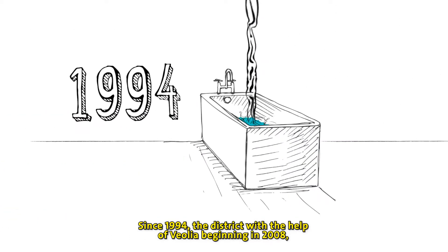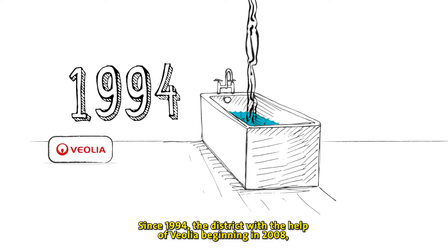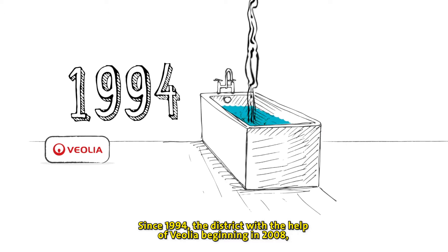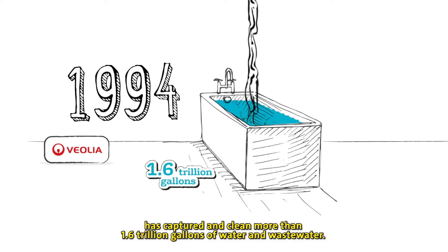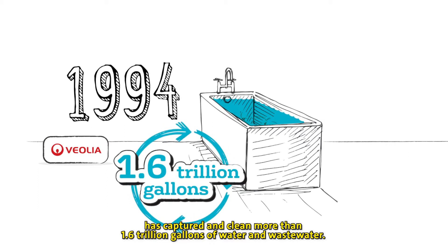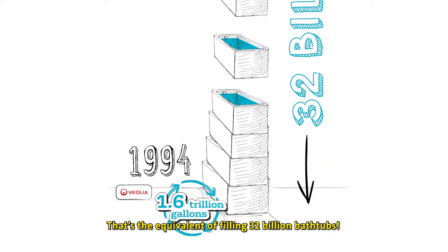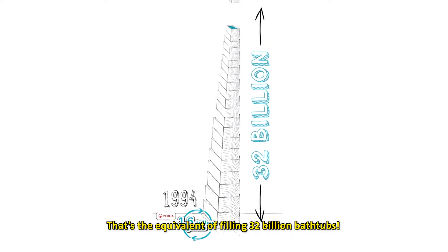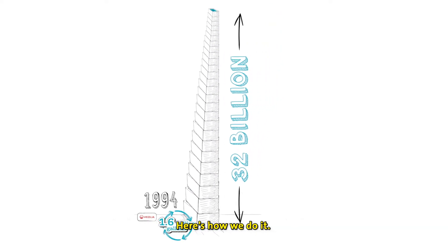Since 1994, the district, with the help of Veolia beginning in 2008, has captured and cleaned more than 1.6 trillion gallons of water and wastewater. That's the equivalent of filling 32 billion bathtubs. Here's how we do it.